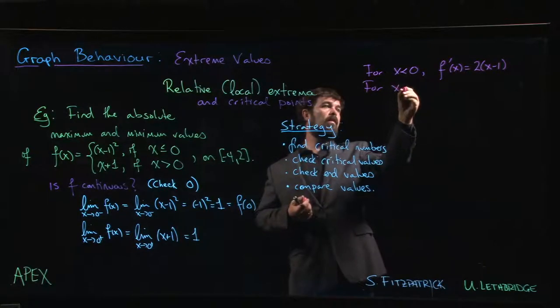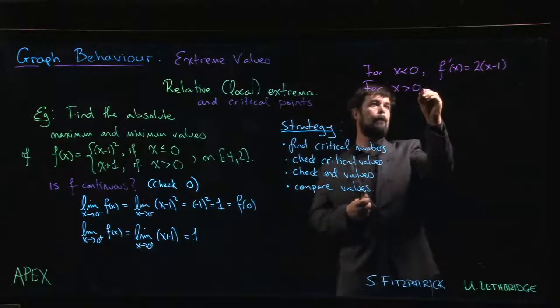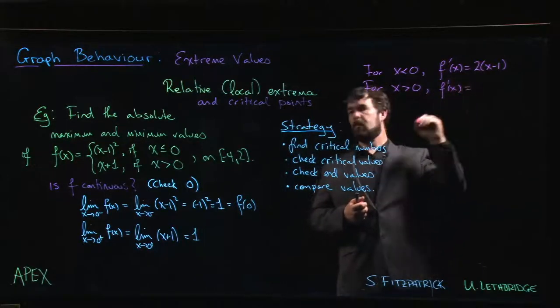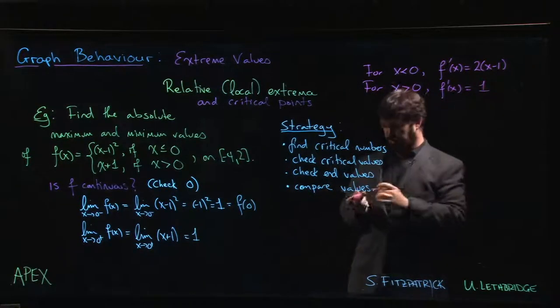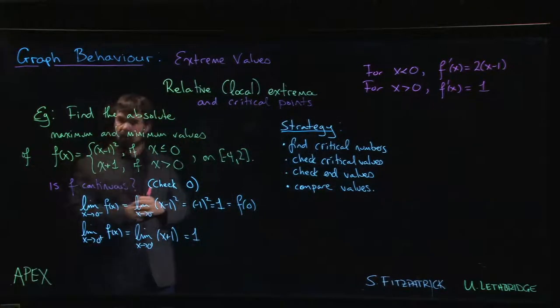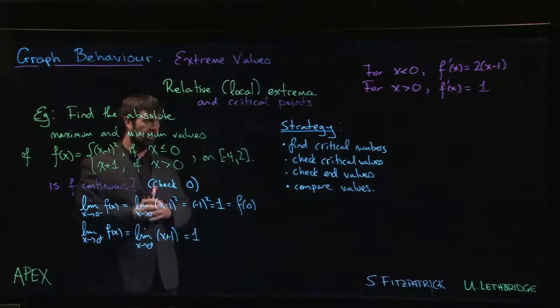So for X bigger than 0, f prime of X is just 1, so never 0. So the only possible critical number for our function is going to be at 0, where we transition between the two formulas.